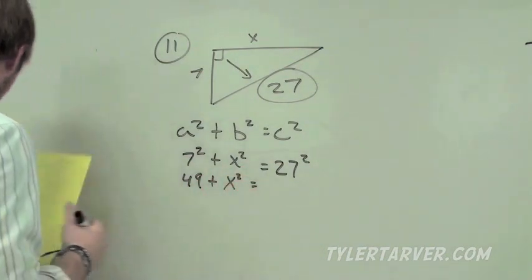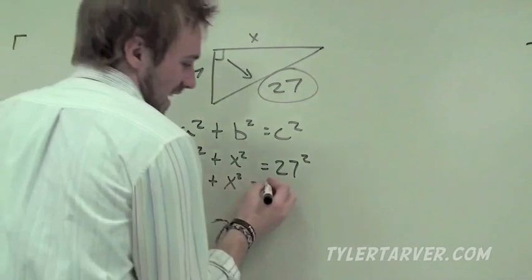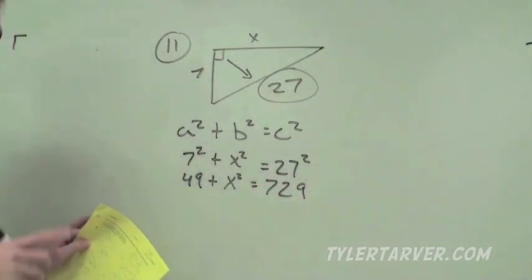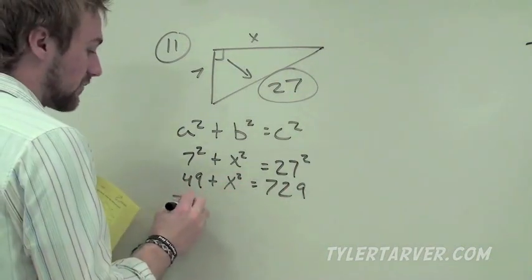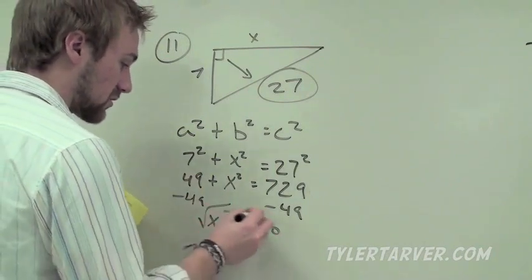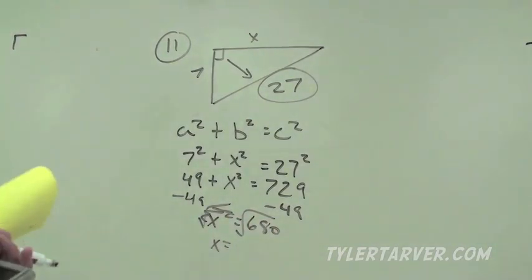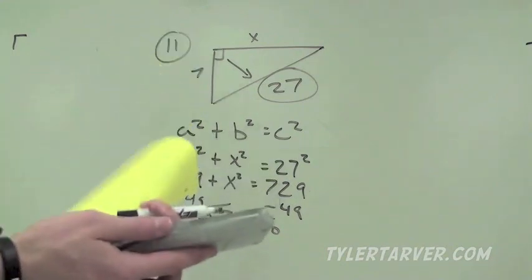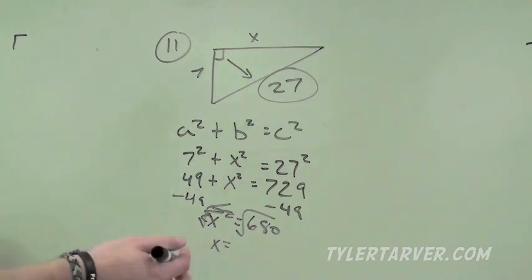We can simplify 7 squared to 49, but we can't simplify X squared because we don't know what X is. Then 27 squared equals 729. We need to get X by itself, so subtract 49: X squared equals 680. Then take the square root of both sides — the squared cancels out — and X equals the square root of 680. Plugging that into a calculator gives approximately 26.08.